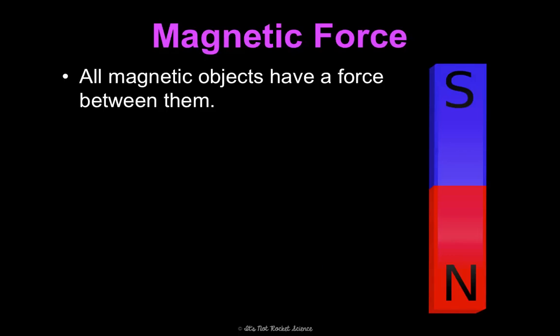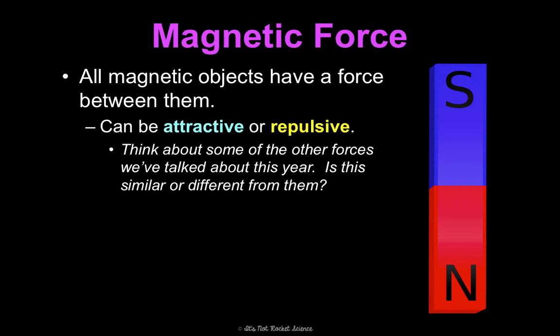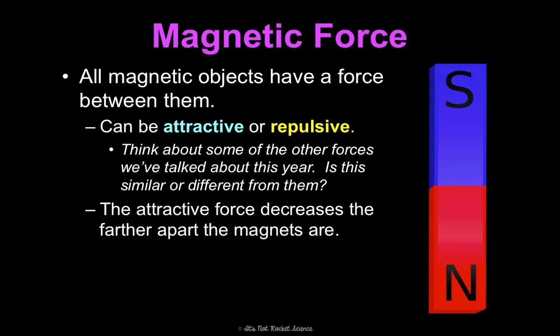All magnetic objects have a force between them, and that force, similar to electrical, can be attractive or repulsive. Think about some of the other forces we've learned about this year. Is this similar or different? So we've learned about electrical and gravitational. Remember, a gravitational force is always attractive. Electrical force is similar to magnetic force in that it can be attractive or repulsive. What's interesting about magnetic force is the attractive force decreases the farther apart the magnets are, which is just like gravitational force. The farther away, the less the impact.